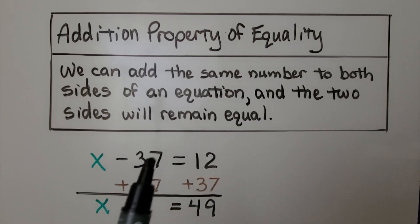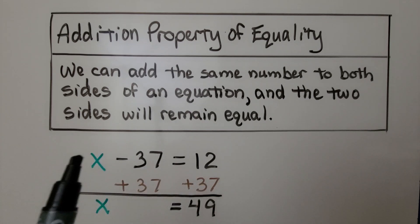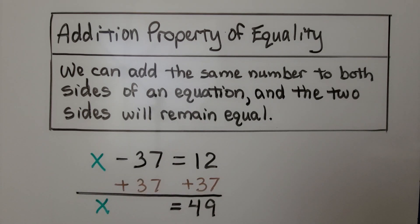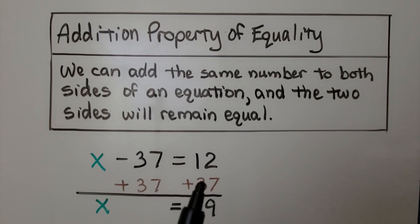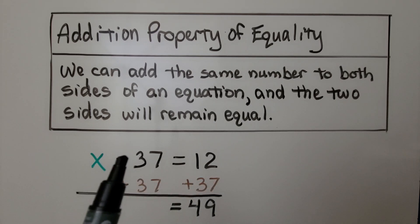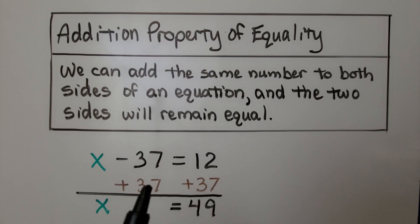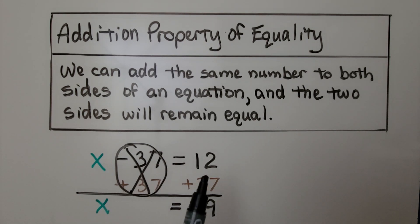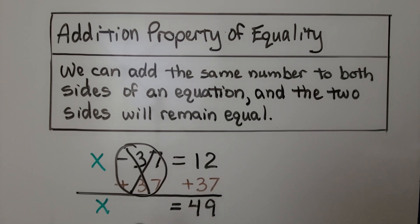We know we can add 37 and 12 together to find out what x is. For the addition property of equality, we add 37 to each side of the equation. We have a minus 37 here, so we do a plus 37. That's going to create a zero pair and eliminate the minus 37 from the equation. We add 37 to the other side of the equal sign and we get 49. We know that x is equal to 49.